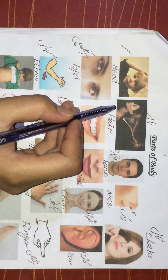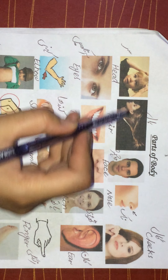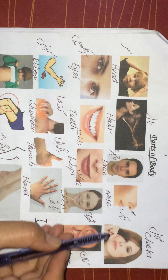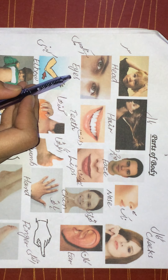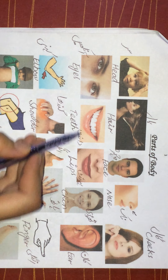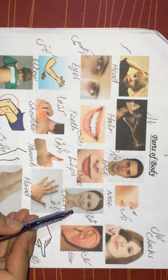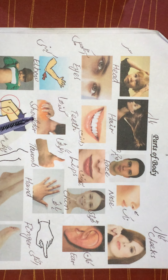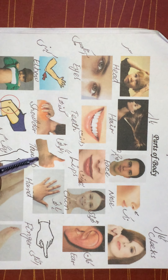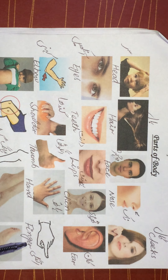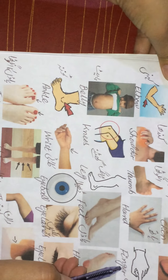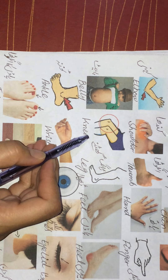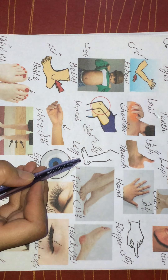Parts of body: head (SAR), hair (BAL), face (CHEHRA), nose (NAAK), cheeks (GAL), eyes (ANKHIN), teeth (DANTH), lips (HONT), chin (THODI), ear (KAAN), elbow (KOHNI), shoulder (KANDA), thumb (ANGOOTHA), hand (HATH), finger (UNGGLI), belly (PAIT), knees (GHUTNAY), leg (TONG).